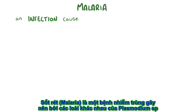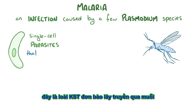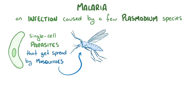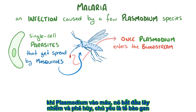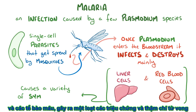Malaria is an infection that can be caused by a few different types of plasmodium species, which are single-celled parasites that get spread around by mosquitoes. Once the plasmodium gets into the bloodstream, it starts to infect and destroy mainly liver cells and red blood cells, which causes a variety of symptoms and sometimes even death.